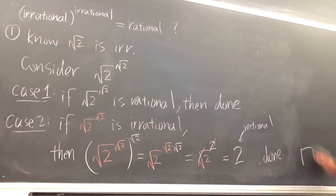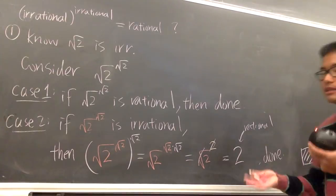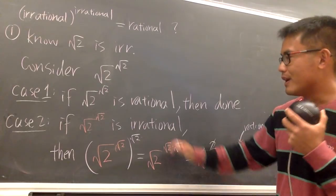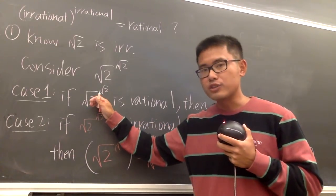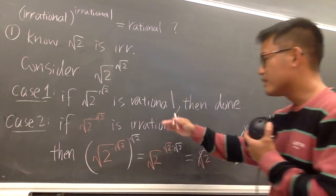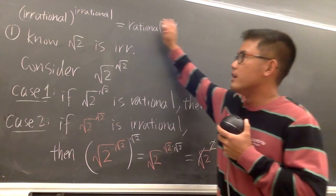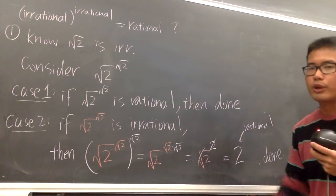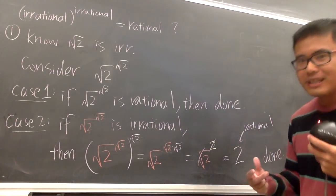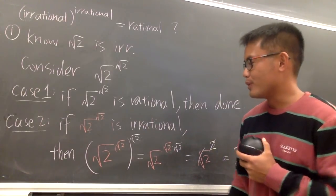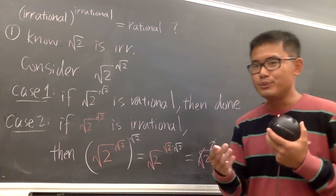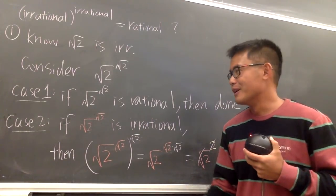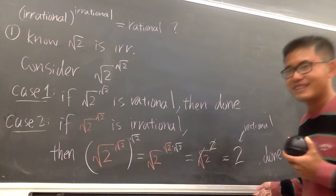So this is it — the first way I wanted to show you guys. I did not know whether √2^√2 was rational or irrational. But in either case, I was able to show that the original statement was possible. That's the most important thing. To make us feel better, I'll tell you this is, in fact, irrational — I know someone is going to prove that in the comments, so go ahead.